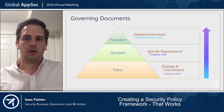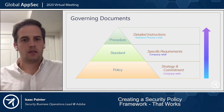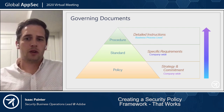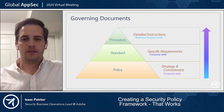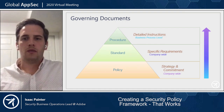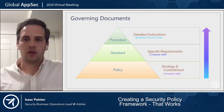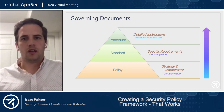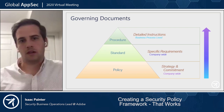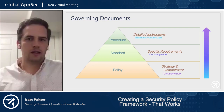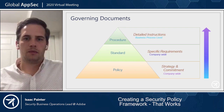Your policy defines your strategy and commitment to security subjects — it could be logical access, operations, or your overall arching information security policy. You want to scale that commitment across the company without factions of policies everywhere. Your standards also scale across the business, getting into the very specific requirements of what you're doing to meet that policy. Then your procedure is the how — the detailed instructions, typically at the business process level.